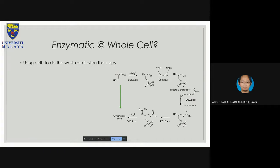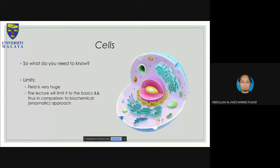You can use cells instead of isolated enzymes. But of course it's not as easy as it sounds, because you need to think about what is the source of the cell and whether the cell itself contains all the enzymes you require to produce the specific glycolipids or fats that you want. Therefore, we need to look into cells a little bit to understand what you can do with them and what the limitations are in terms of using cellular technology to produce a product of interest.